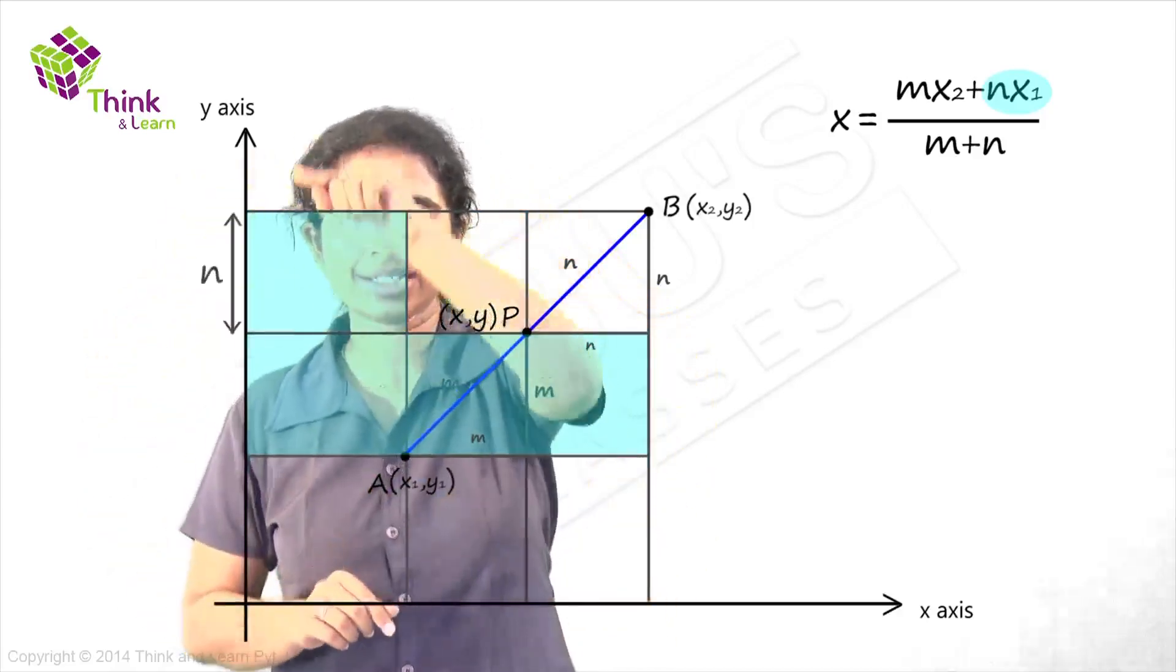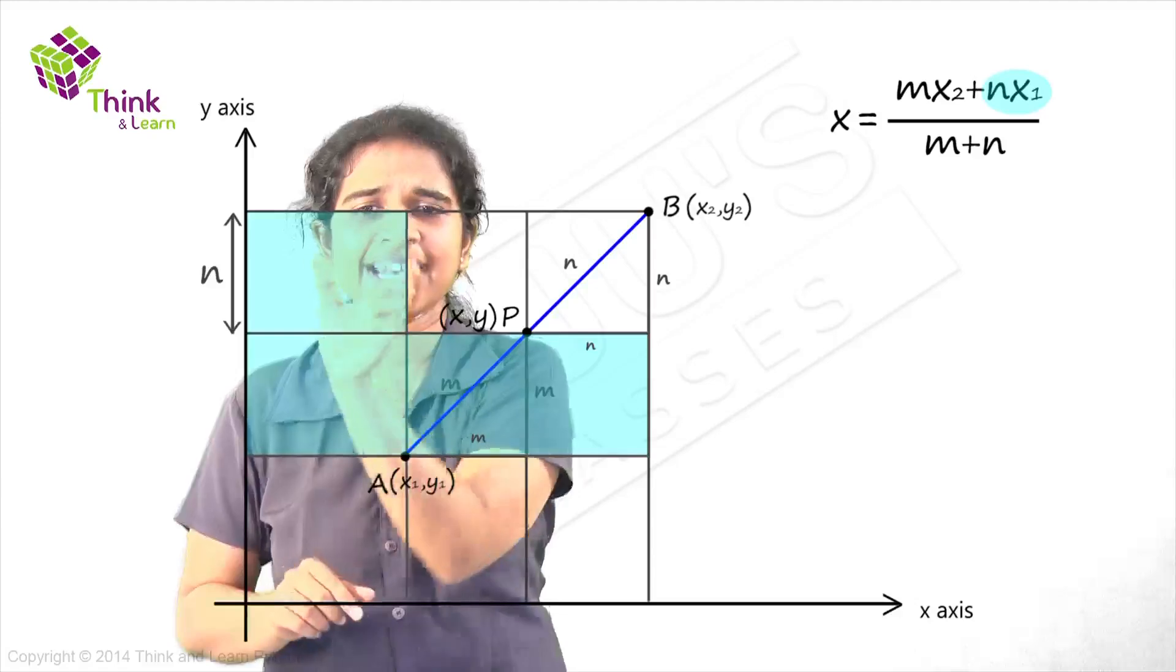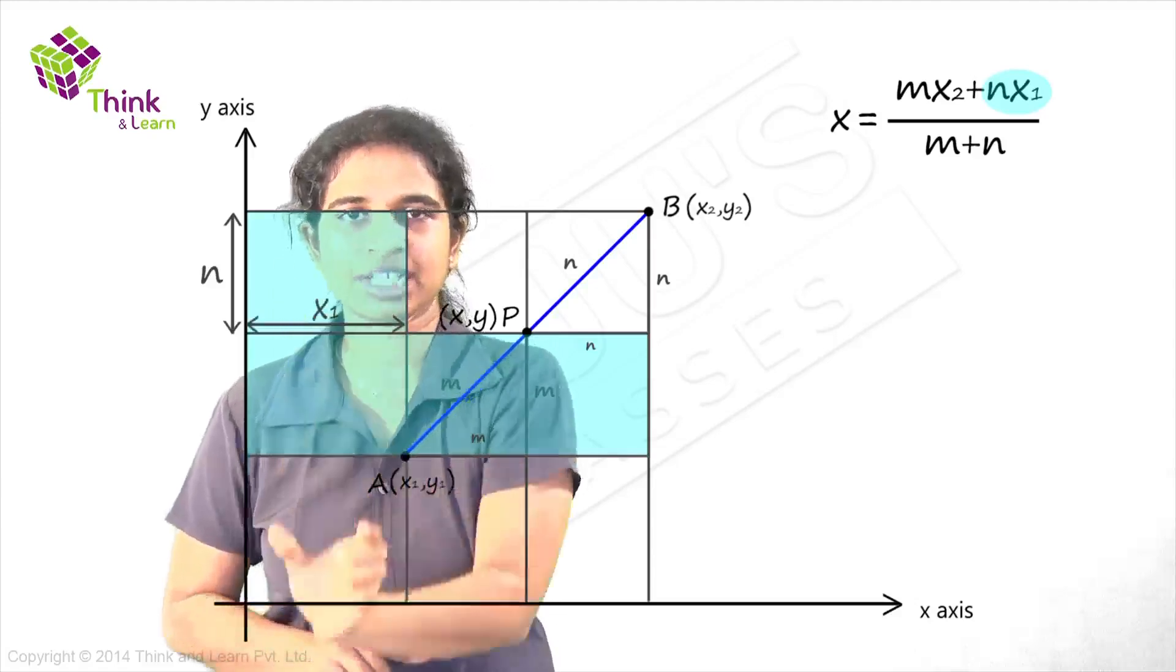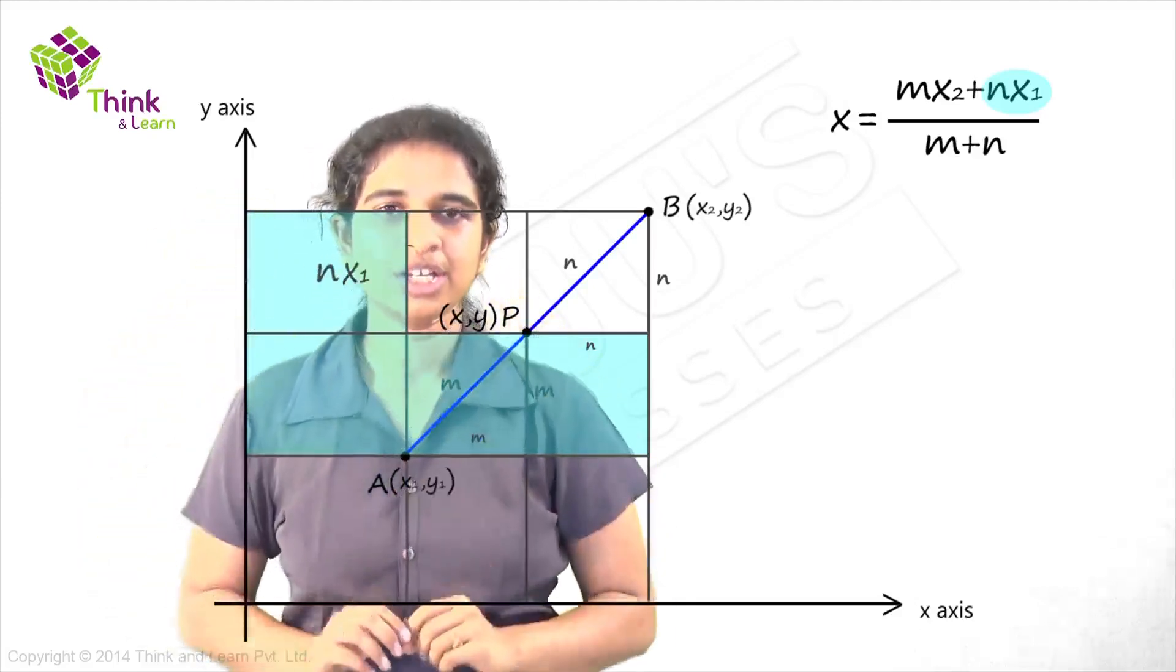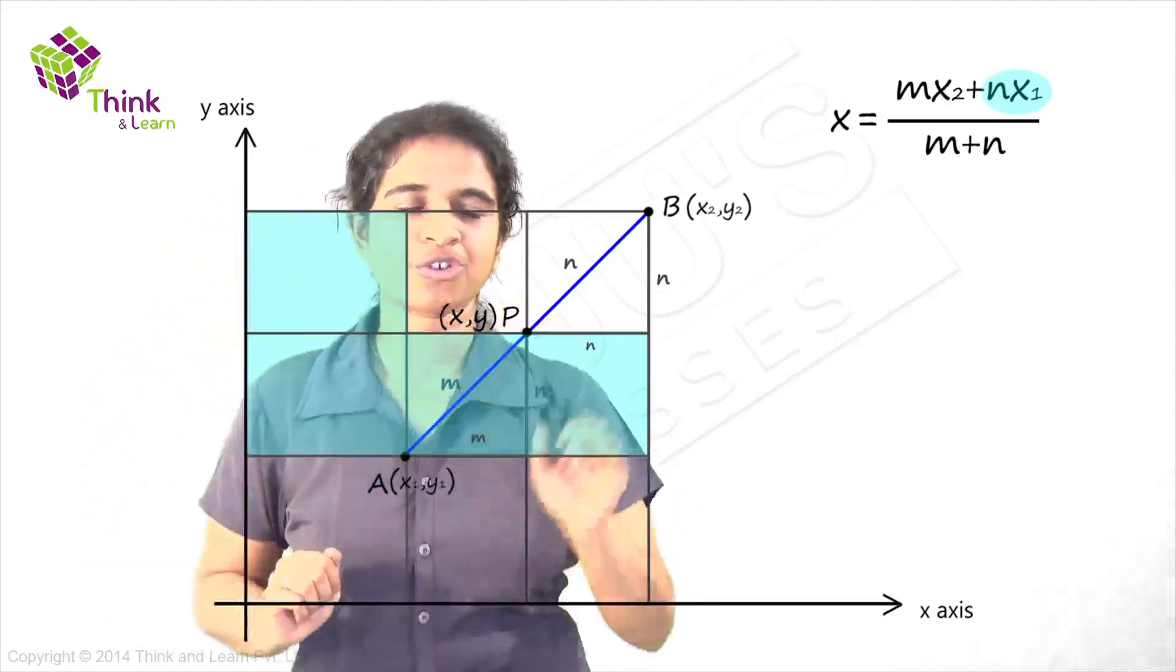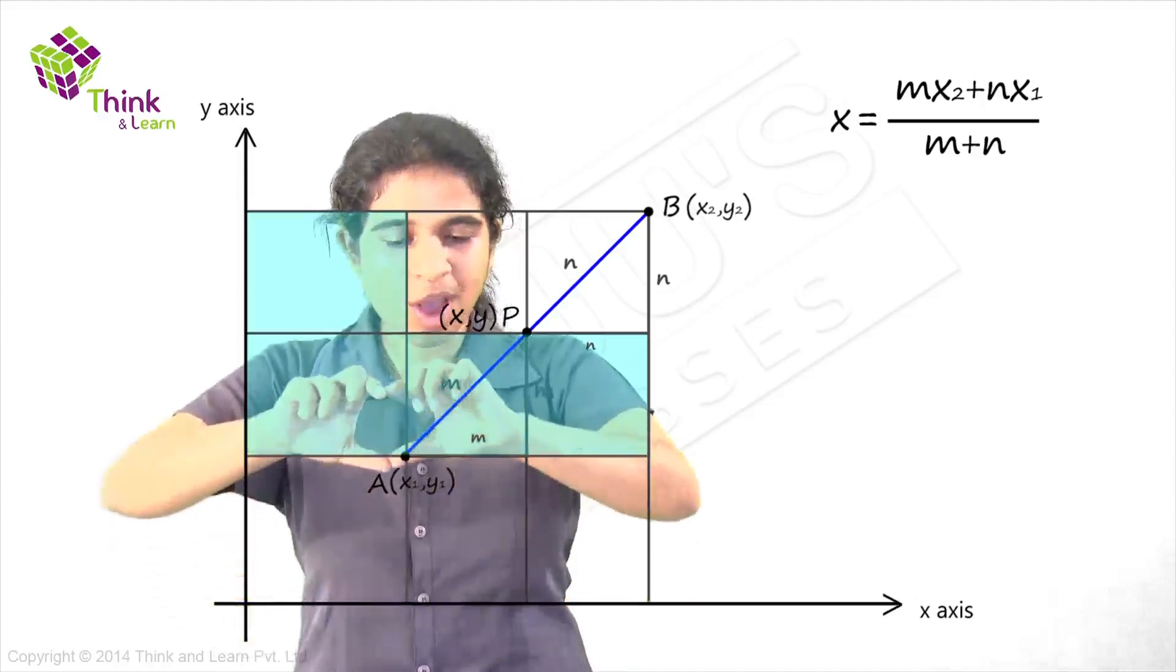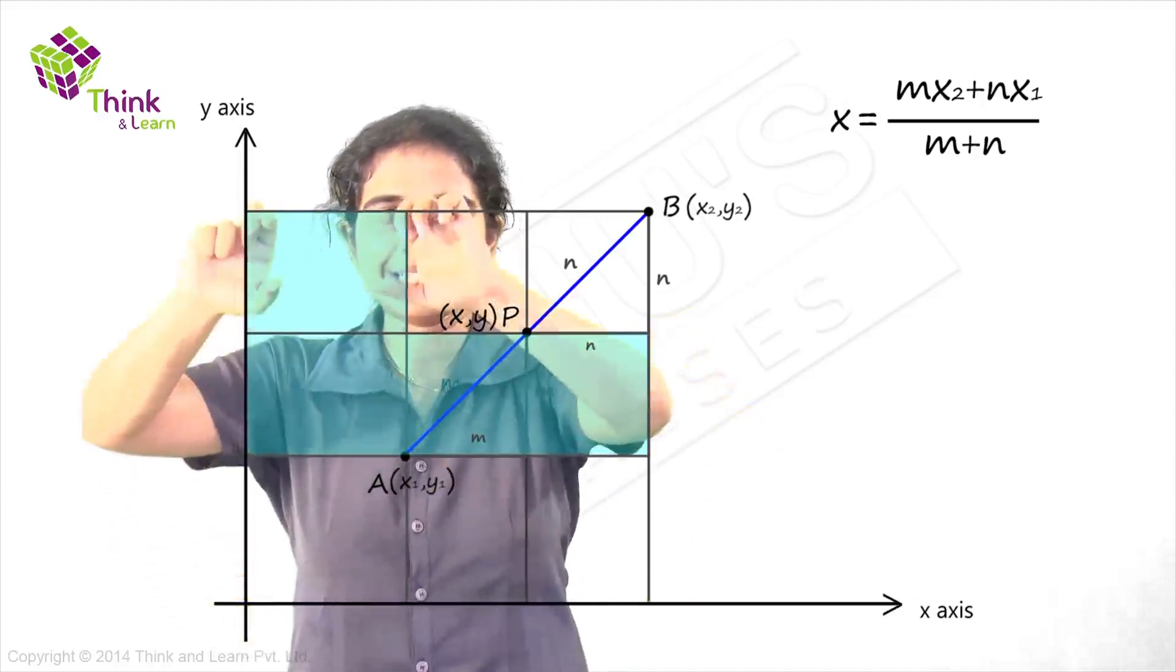This is n and this is x1, which is nothing but the x coordinate of point A. So this rectangle is nx1. So now we'll shade this also because that is part of what it is.